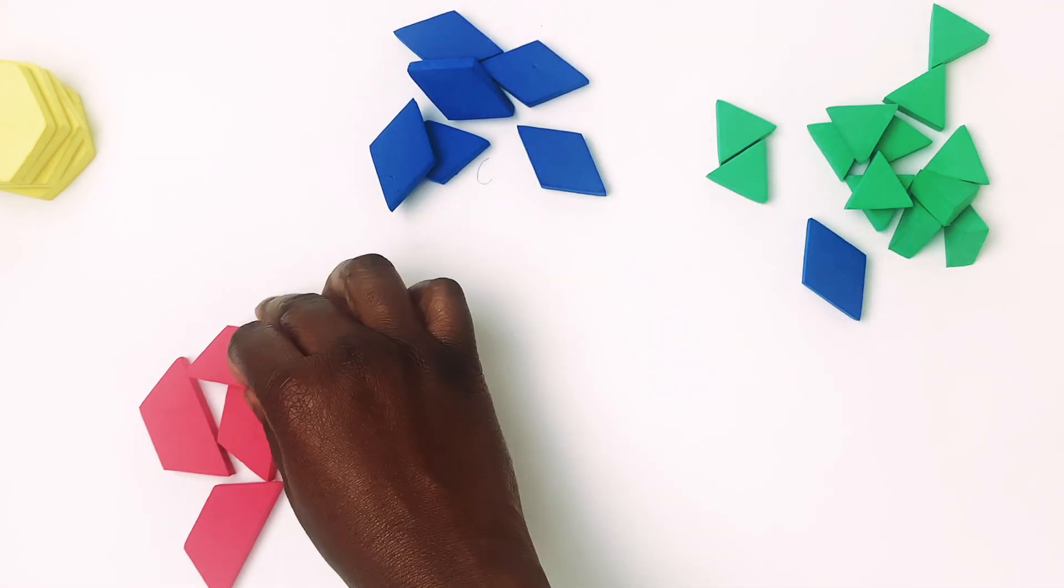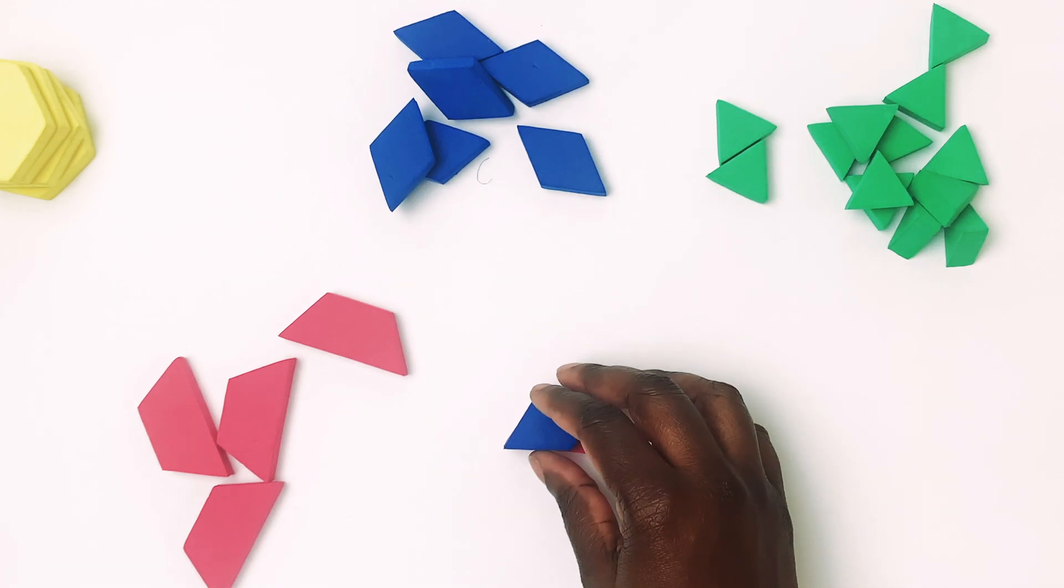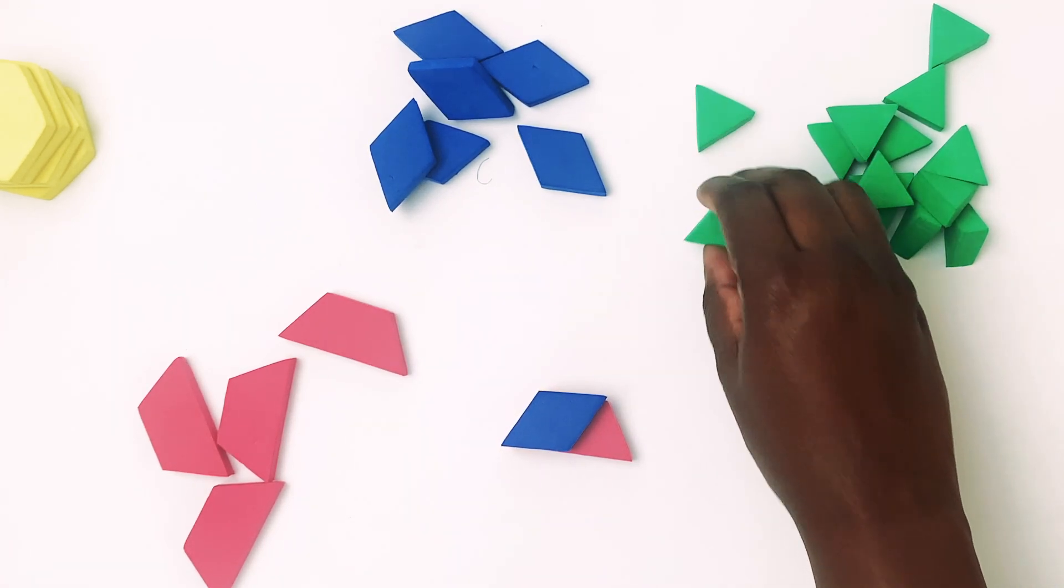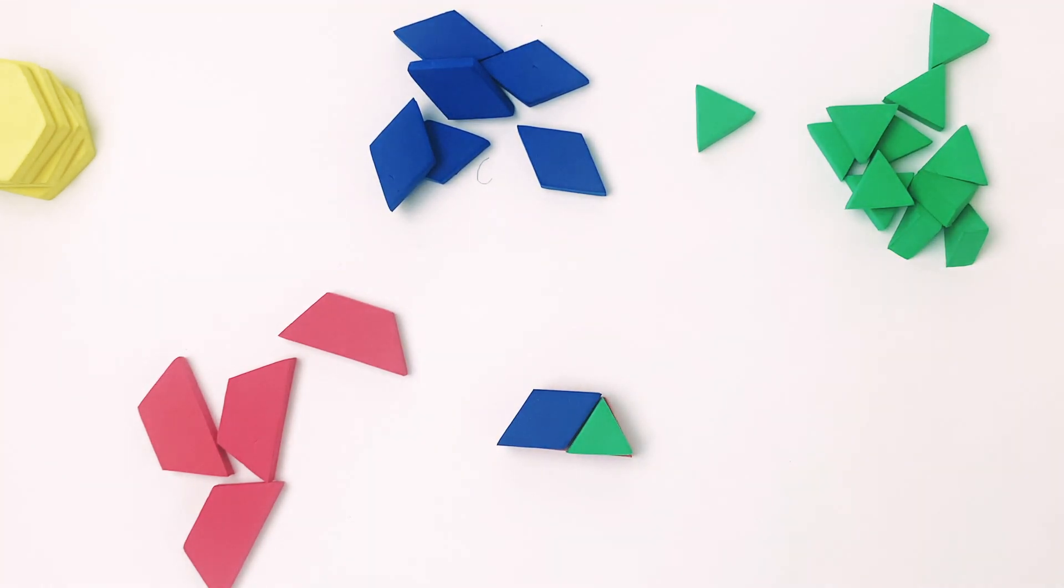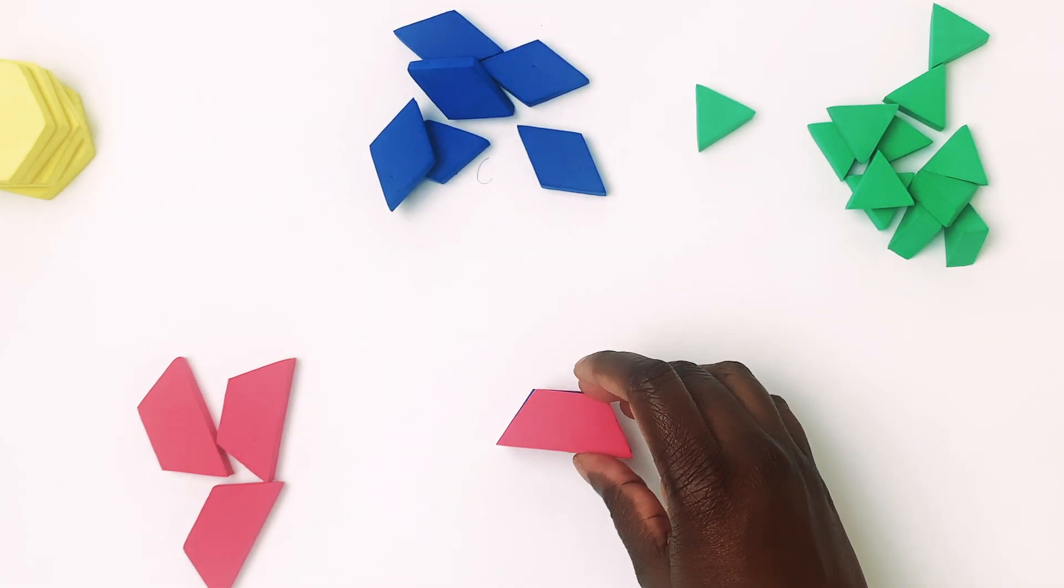Now let's see if we can use maybe some triangles to create. Oh, wait. Look at that. We got a rhombus and a triangle, and it creates a trapezoid. Look at that. So cool.